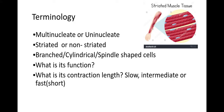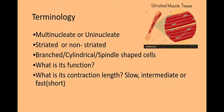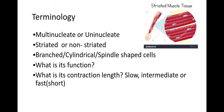There's some terminology we need to know first. Multinucleate means there are several nuclei within the cell; uninucleate means one nucleus per cell. Striated means a stripy appearance, while non-striated means it lacks that stripy look. We also have three cell shapes: branched, cylindrical, and spindle. We also need to know their function and contraction speed — slow, intermediate, or fast.